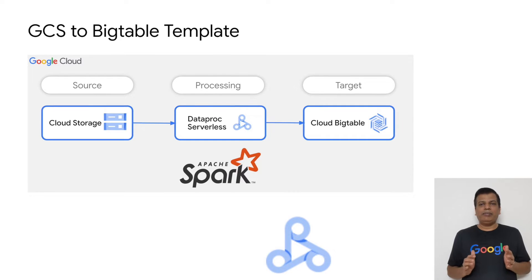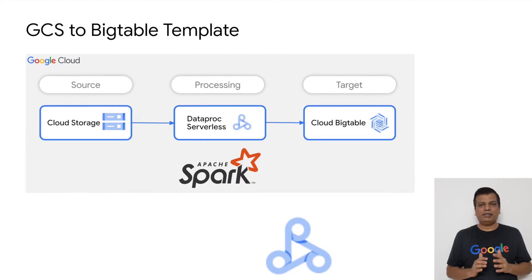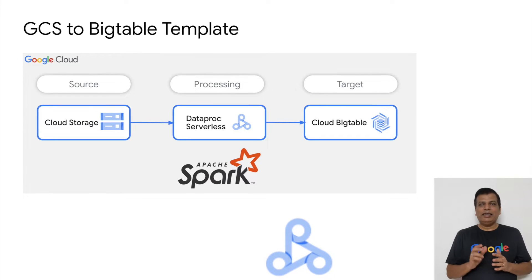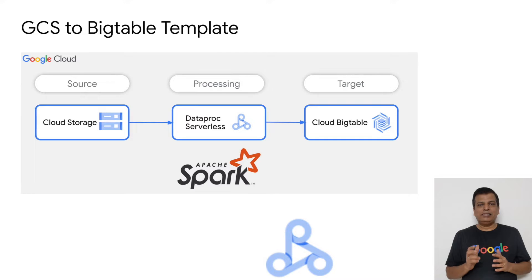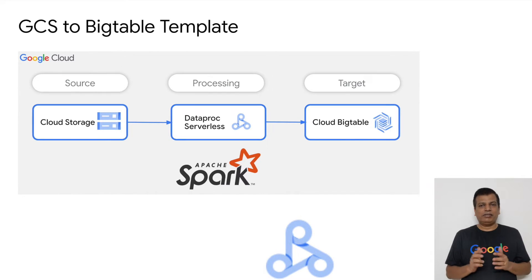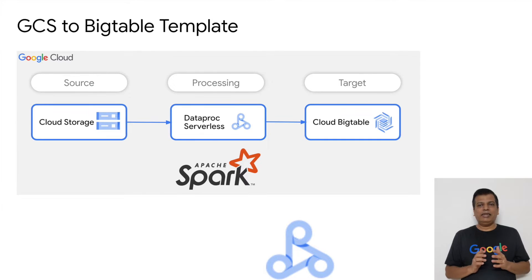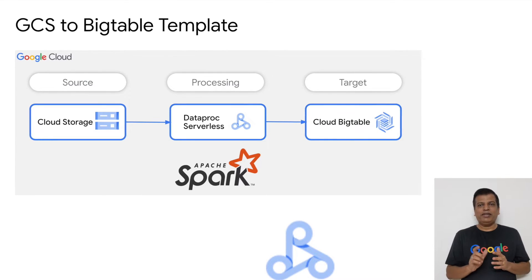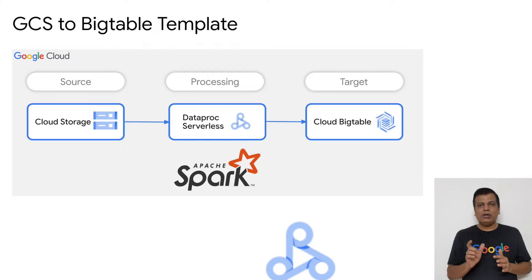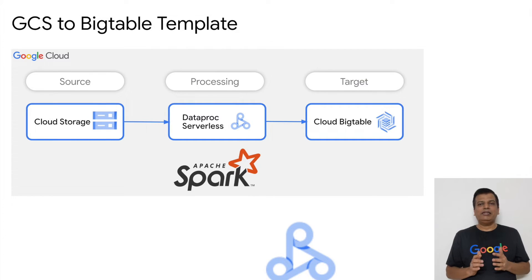Behind the hood of this template lies the power of Spark provided by Dataproc serverless. It accesses the data in GCS and loads the data in parallel at a much faster pace, driven by the number of worker nodes which are handled internally by Dataproc serverless. Once the batch job is started, Dataproc serverless looks into the job configuration and starts the Spark session. Right now, there is no logic written for any transformation — it just loads the data into Bigtable from GCS. But in case any enhancements are required, they can be carried out in no time.